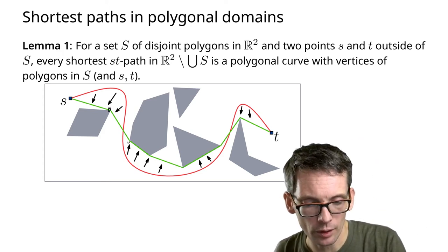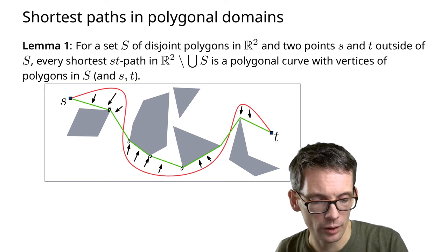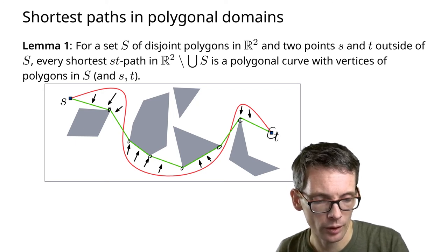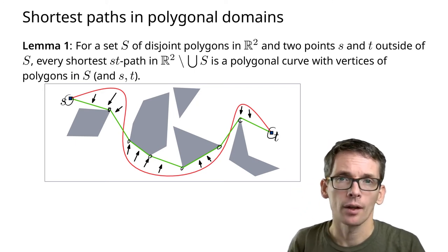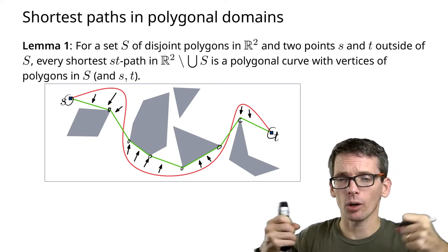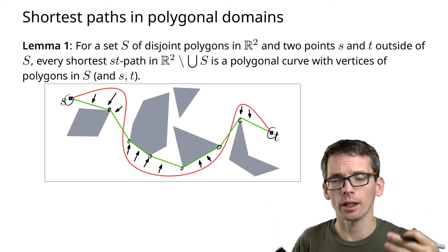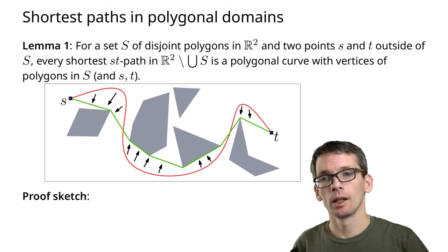Imagine pulling that, if this is kind of a rope, pulling it tight, then it will at some point touch the obstacles and eventually look like this. Any path that does not use only vertices of the obstacles and t and s itself,